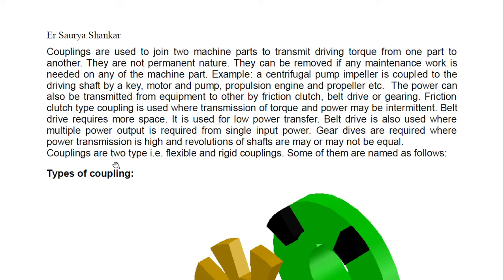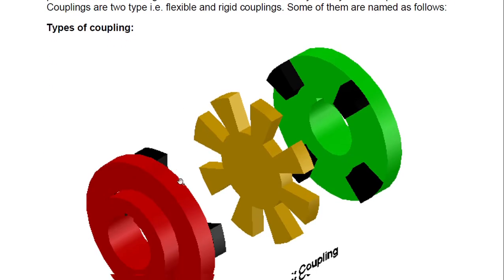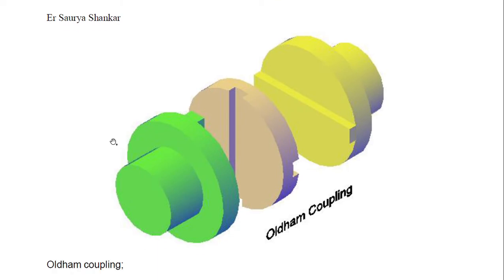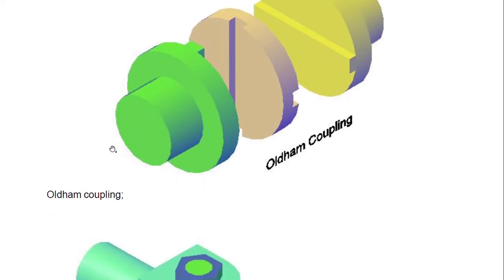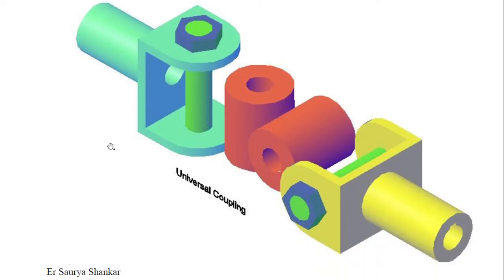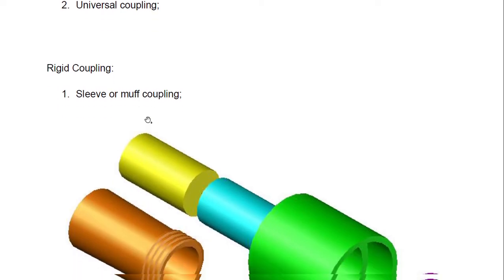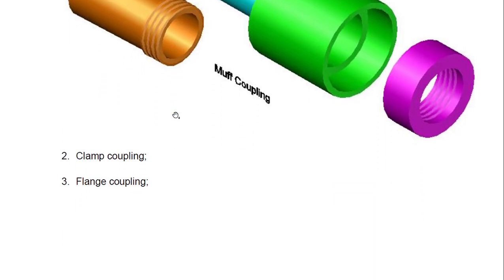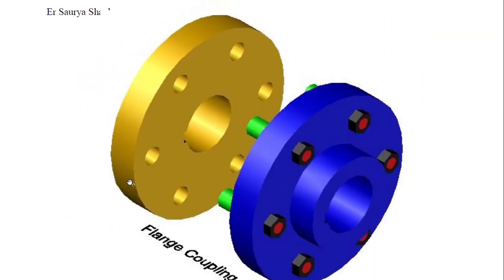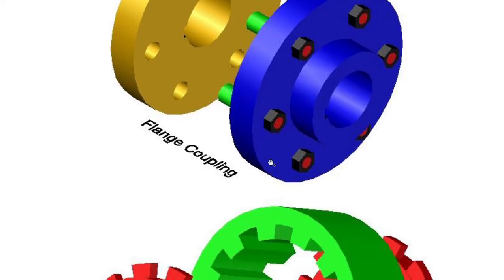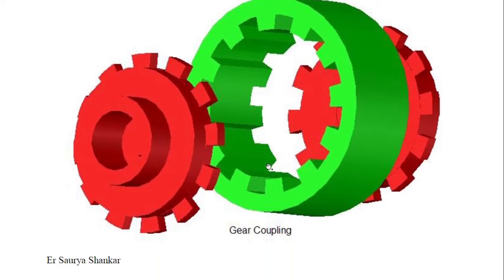Couplings are of two types: flexible and rigid. For flexible coupling we have jaw coupling, Oldham coupling, and universal coupling — one of the very important couplings. For rigid coupling we have sleeve or muff coupling, clamp coupling, and flange coupling. Flange coupling is also very important and is found on main engine shafts. We also have gear coupling.